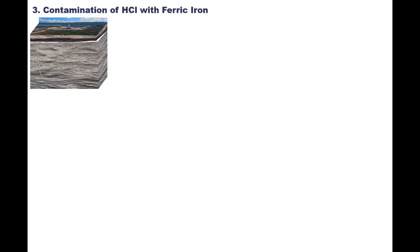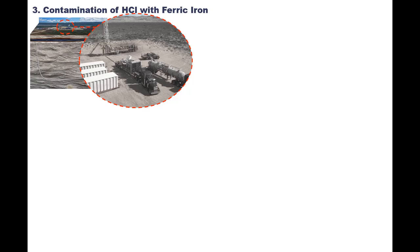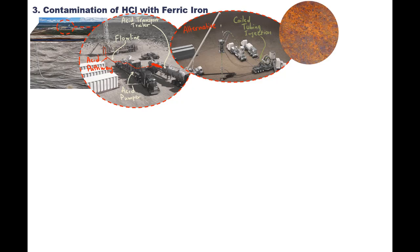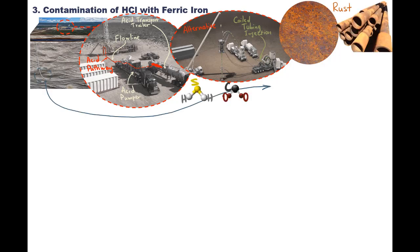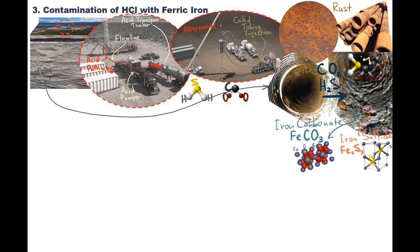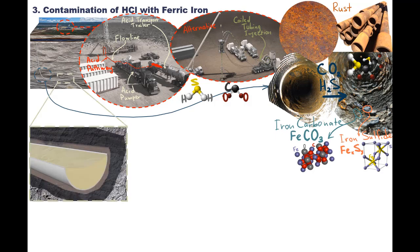It is easy to contaminate HCl with ferric iron. Let's follow the pathway of acid. First we mix it in a mixing tank or bring it with an acid transport trailer. Then it goes into the acid pumper unit, through flowline equipment, and finally down hole — sometimes using coil tubing. HCl contacts surfaces of various tanks and pipes, and often these surfaces have rust on them. Moreover, when HCl travels downhole, it contacts other materials. In wells with acidic gases such as carbon dioxide and hydrogen sulfide, we can often find iron sulfide and iron carbonates built up on pipe walls. As fresh, live HCl passes through these tanks, pumps, and well tubulars, it will dissolve all these corrosion products, contaminating the HCl with ferric iron.